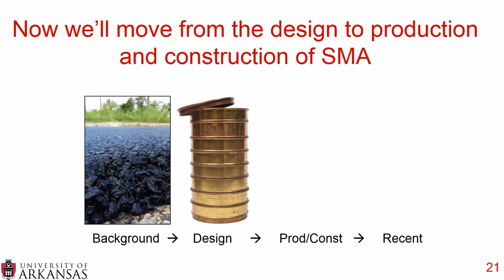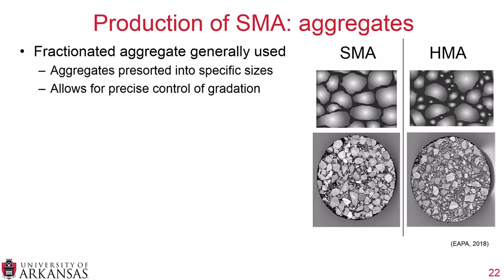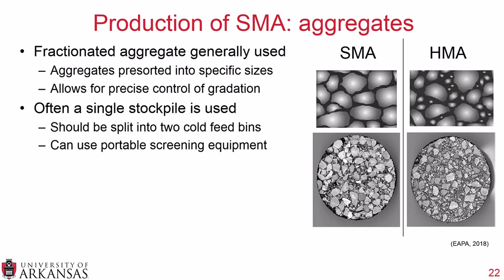Moving to production and construction of SMA: production usually uses fractionated aggregates — pre-sorted into specific sizes — because precision control for gradation is absolutely critical to ensure good field performance. By fractionating aggregate at the production facility, you have much more precise control. Often a single stockpile is used because there is so much coarse aggregate in the mixture, but you can split it into two cold feed bins to ensure you won't run out during production. Portable screening equipment can also be used if necessary.